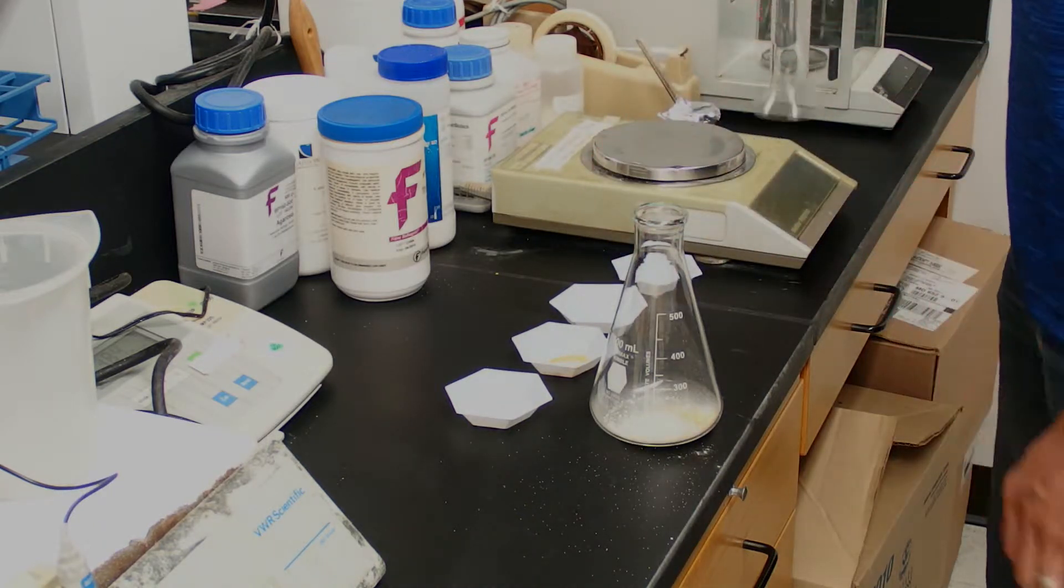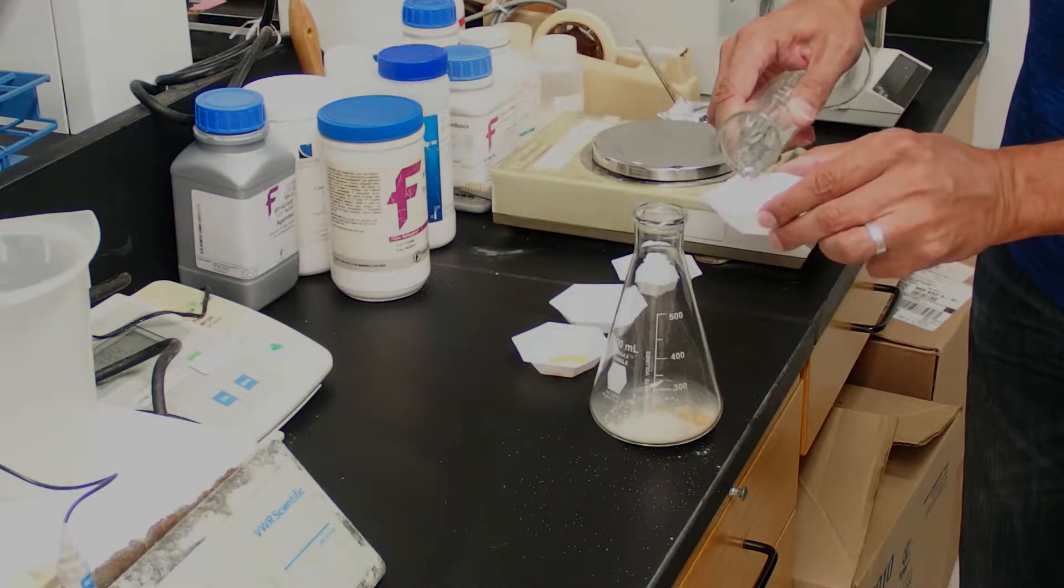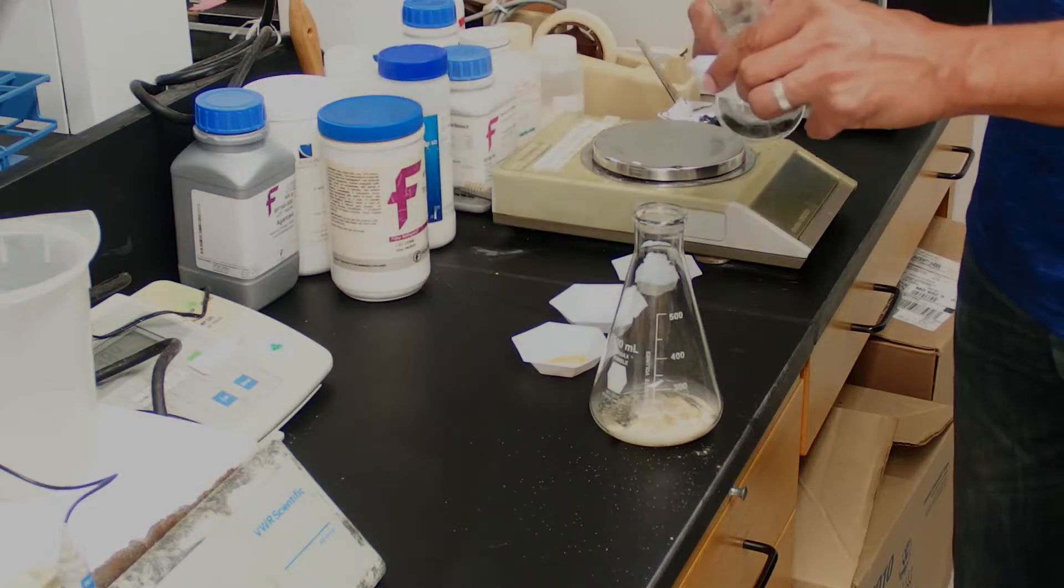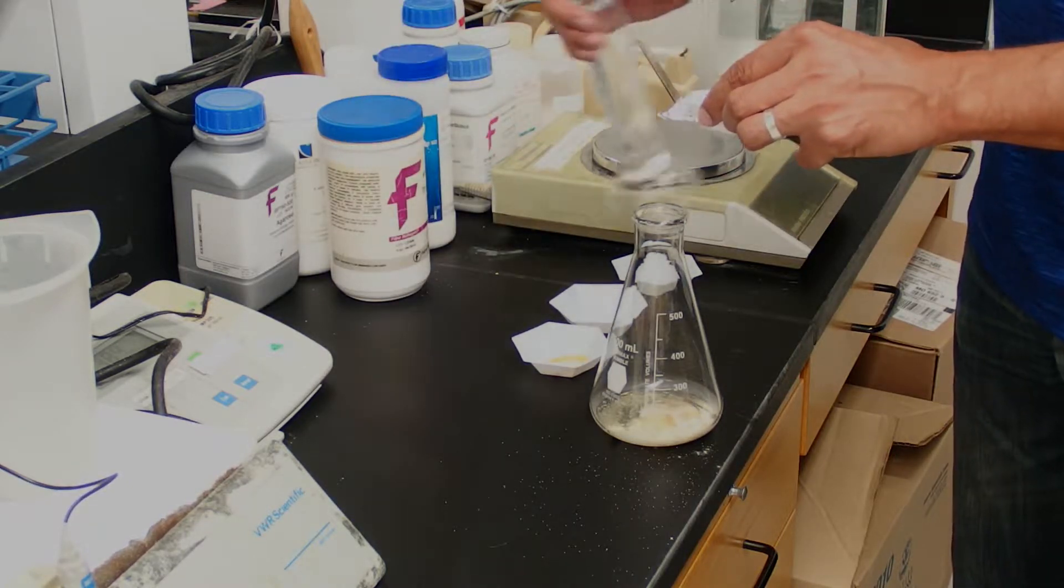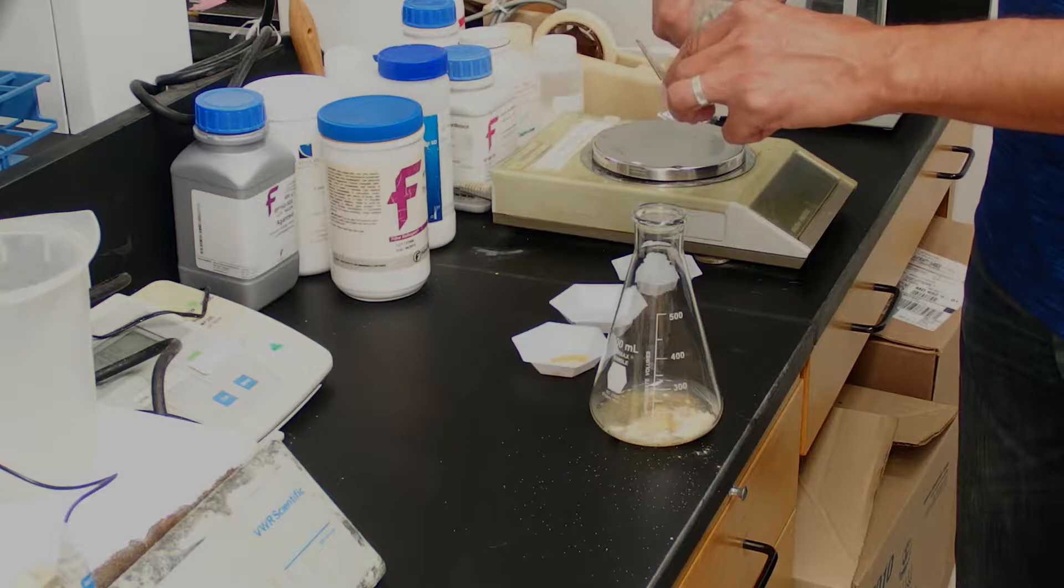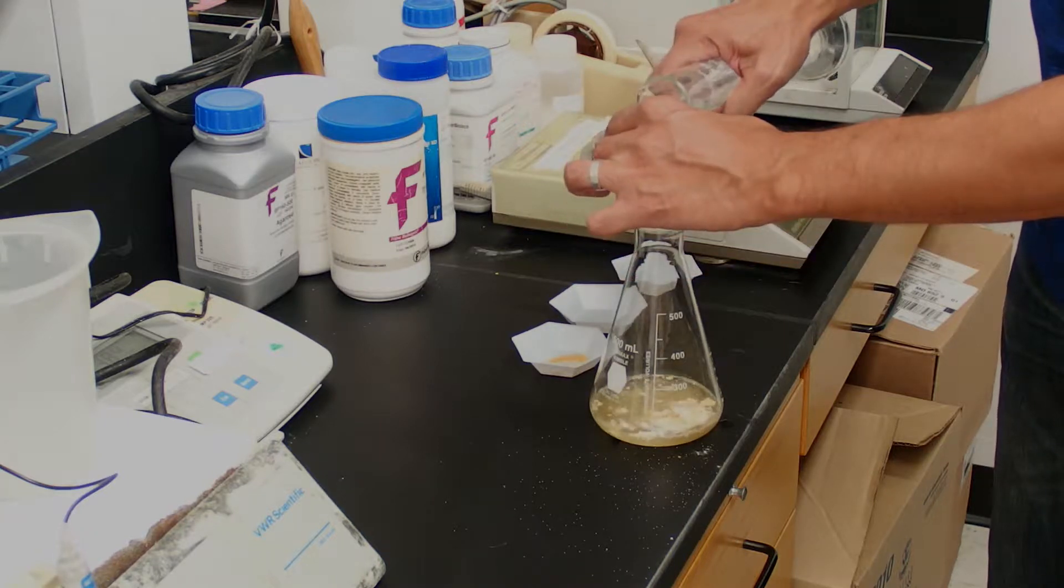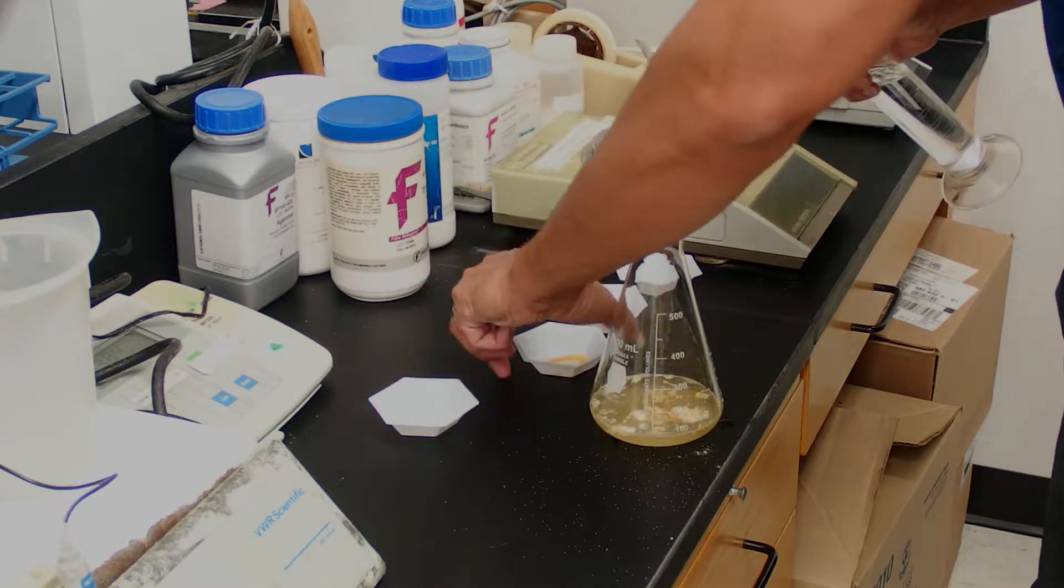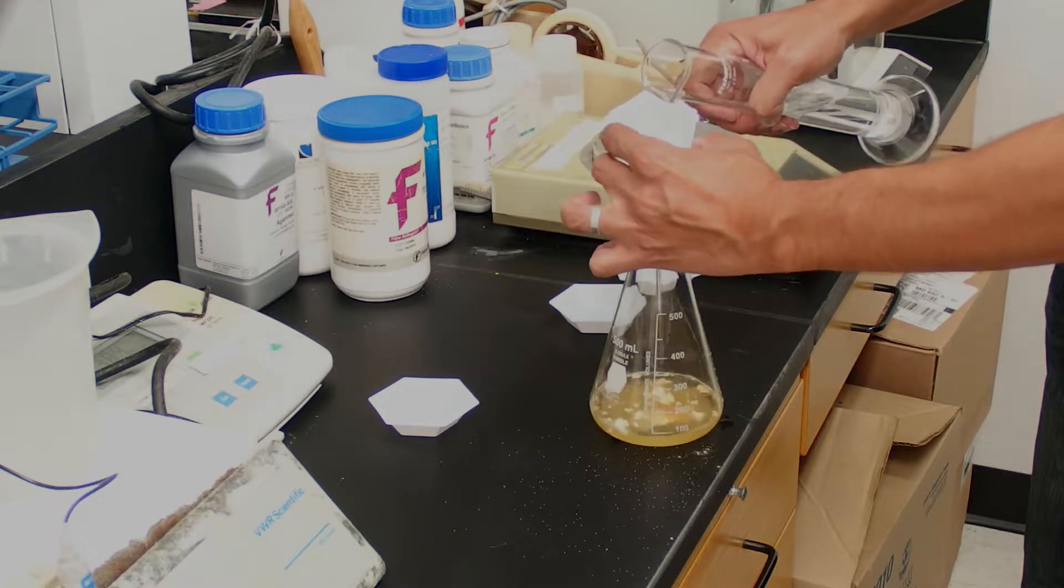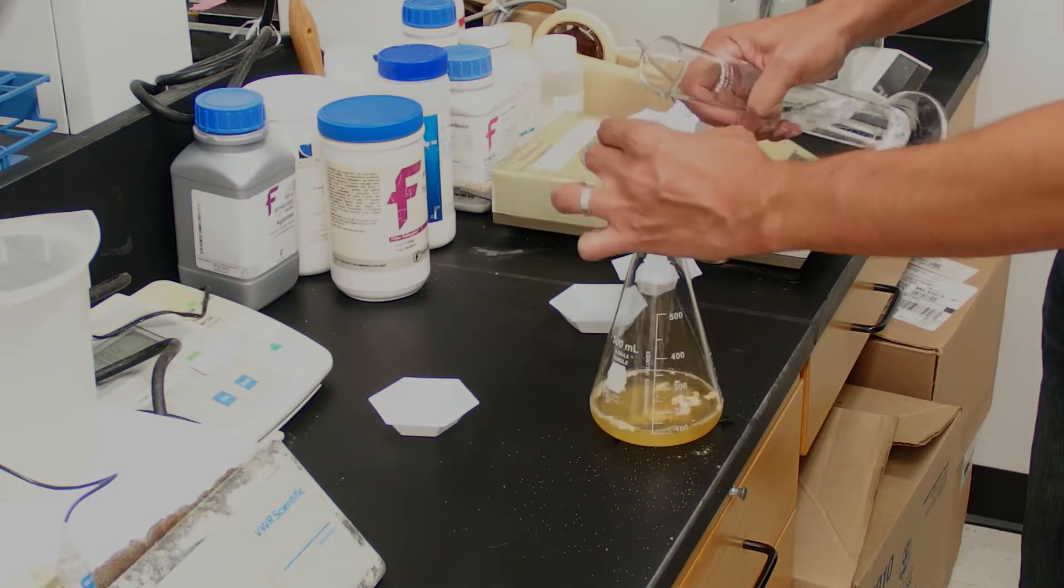I have 200 milliliters of ultra-pure water. I'm going to use to rinse these weighing boats out into the Erlenmeyer flask a few times. This way we get all of our media into the flask.